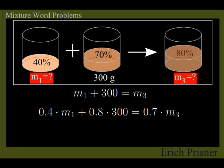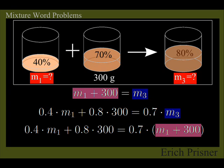The first equation is already solved for M3. So we replace M3 in the second equation by M1 plus 300 to get one equation in one variable. 0.4 times M1 plus 0.8 times 300 equals 0.7 times M1 plus 300 in parentheses.